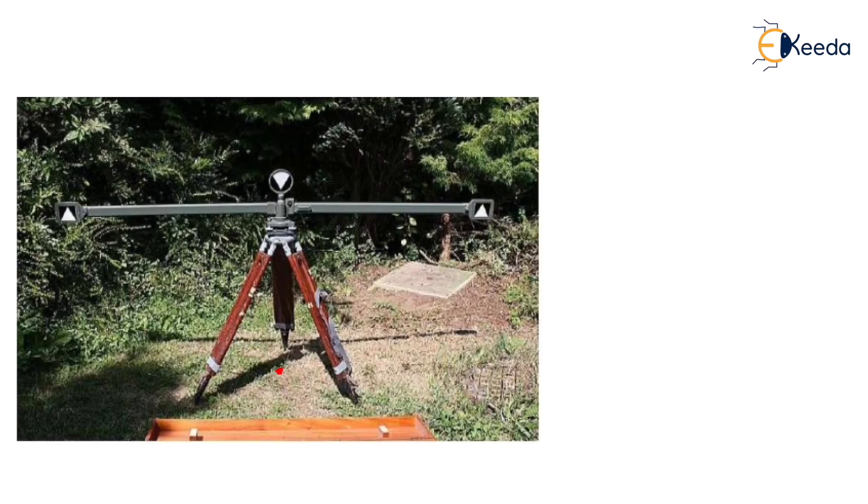Subtense bar is generally a bar of known length with two targets at each end. By using theodolite, we have to bisect target 1 and target 2 and we have to calculate the angle between the two targets. And by knowing that angle and the length, we can calculate the horizontal distance.